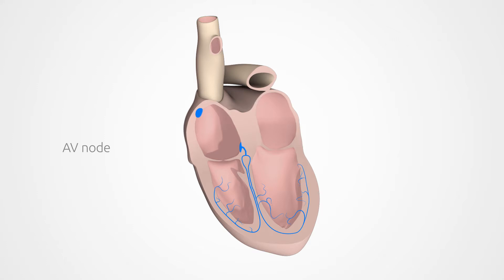In the most severe form, known as third-degree AV-Block, the signals are completely blocked. None of the signals from the sinus node arrive in the ventricles.